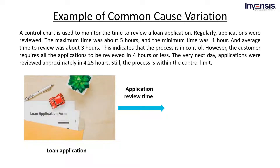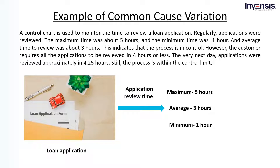Consider a control chart used to monitor the time to review a loan application. Applications were reviewed regularly, with an average time of about 3 hours, a maximum of 5 hours, and a minimum of 1 hour — indicating the process is in control. However, the customer requires all applications to be reviewed in 4 hours or less. The next day, applications were reviewed in approximately 4.25 hours, still within the control limit. The customer is not satisfied, so a manager must make basic changes to streamline the application review process by coordinating with the customer's requirements, reducing variation to meet them.